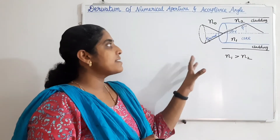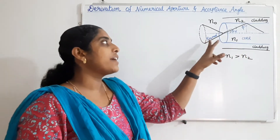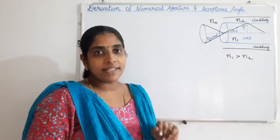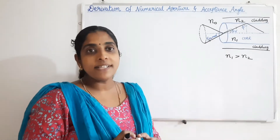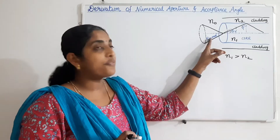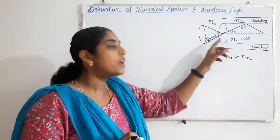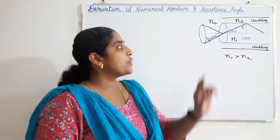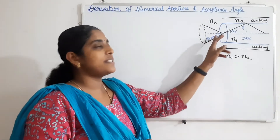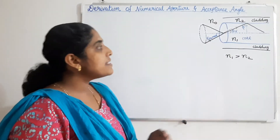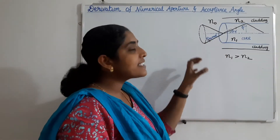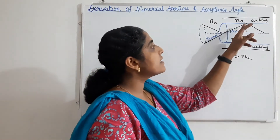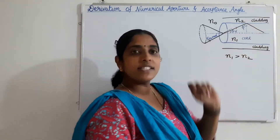Consider a light ray entering into the core at an angle of incidence theta A maximum. Theta A maximum is the acceptance angle — the maximum value of the external angle of incidence at the core so that the light can be guided within the optical fiber. When the angle of incidence equals this acceptance angle, the incident ray gets refracted into the core at an angle of refraction theta R, and it is incident at the core-cladding interface at an angle of incidence phi.